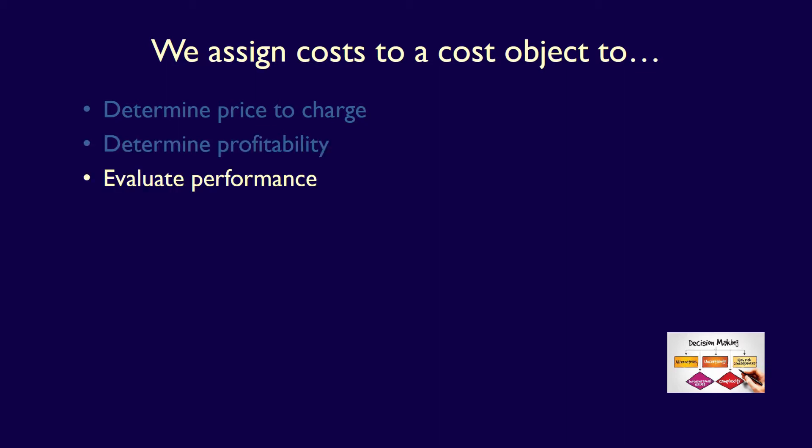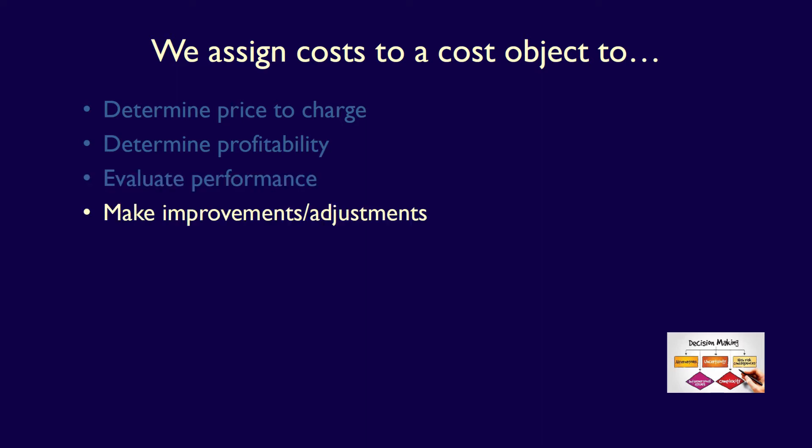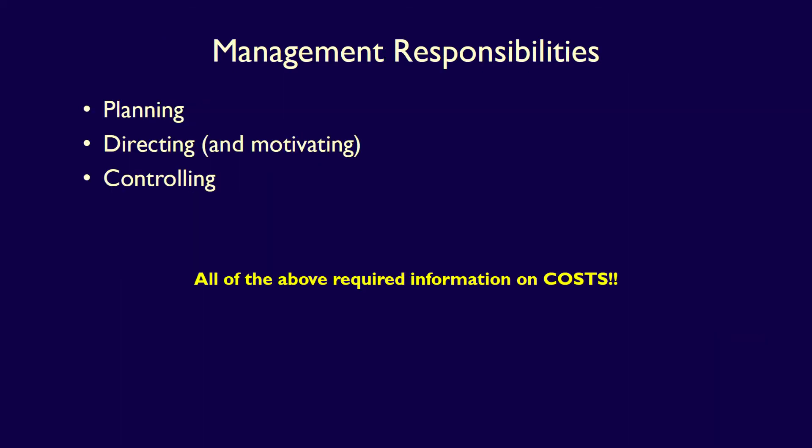We need cost information because if we want to evaluate the performance of, say, the production manager of the stuffed animal department, or the factory, or the corporation, we need to know both their revenues and their costs. Finally, we need information about the cost object so we can continually improve our processes in order to reduce costs. Management can't plan, direct, or control unless they understand costs.